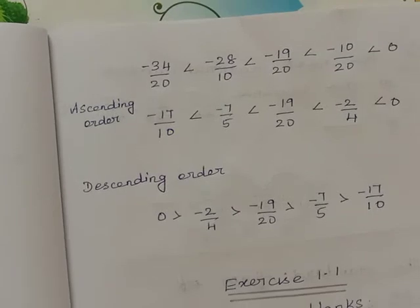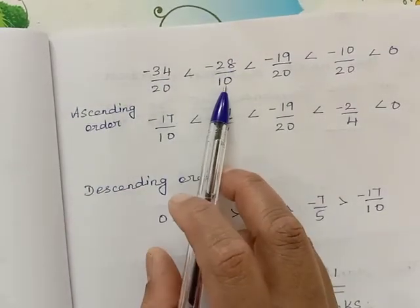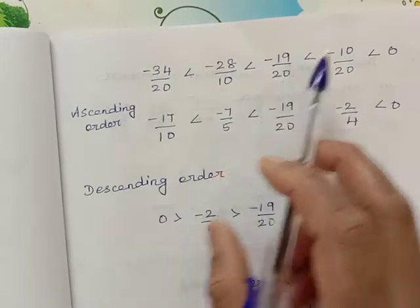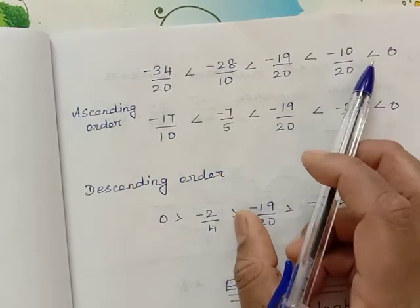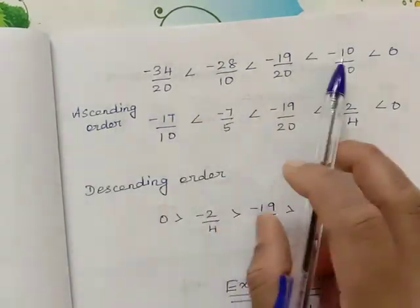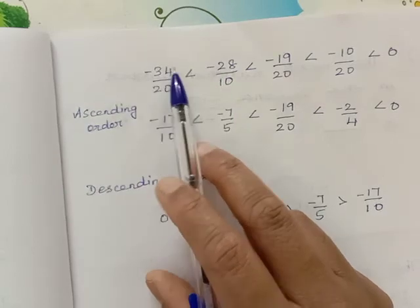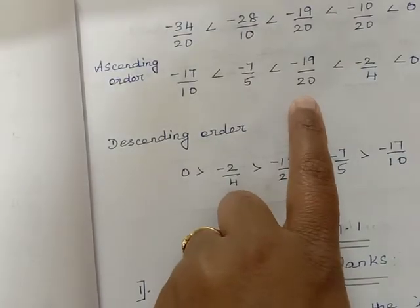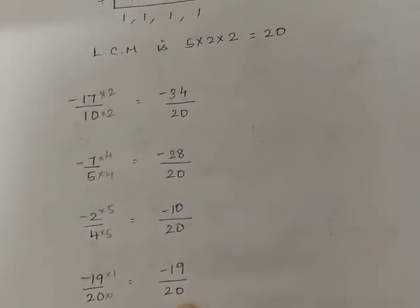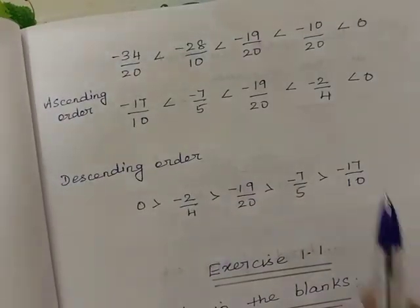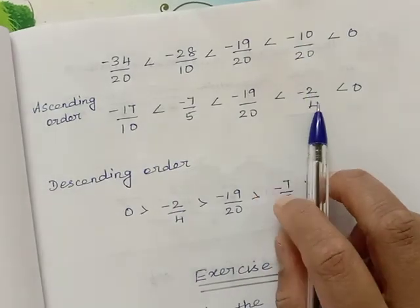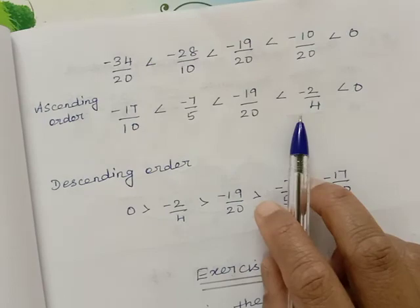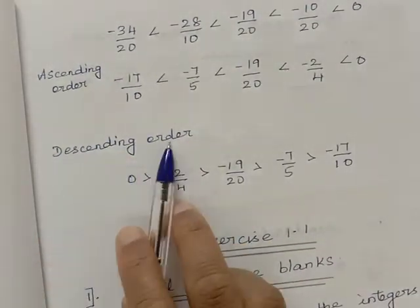From the above numbers: minus 34 by 20 is lesser than minus 28 by 20, lesser than minus 19 by 20, lesser than minus 10 by 20, which is lesser than 0. So the ascending order is: minus 17 by 10, minus 7 by 5, minus 19 by 20, minus 2 by 4, and 0. The reverse of this ascending order gives you the descending order.